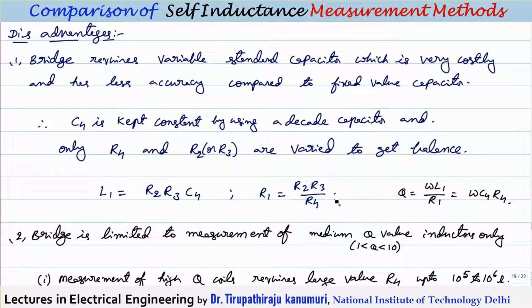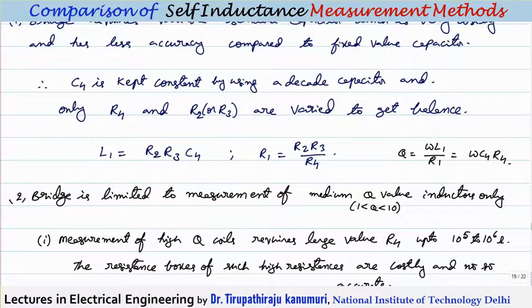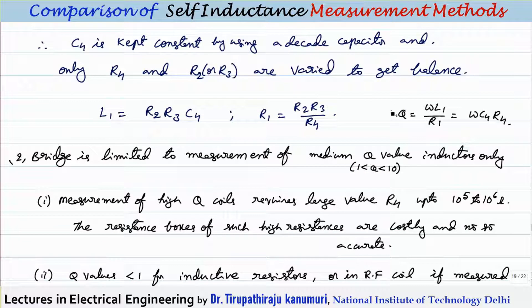However, there is a disadvantage. The quality factor Q = ωL/R, and substituting the balance equation values gives Q = ω × C4 × R4. This bridge is therefore limited to measuring medium Q inductors only, because for high Q coils, as Q increases with constant C, the required value of R4 increases.